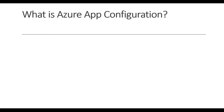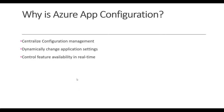Azure App Configuration provides a service to manage application settings and features. Usually we use Azure App Configuration to centralize configuration management, or to dynamically change application settings and control feature availability in real time. In today's demo, I'm going to show you how you can enable a feature in real time using Azure App Configuration.